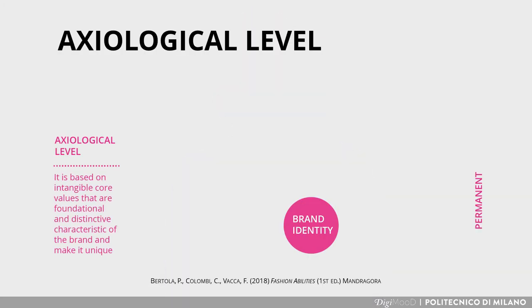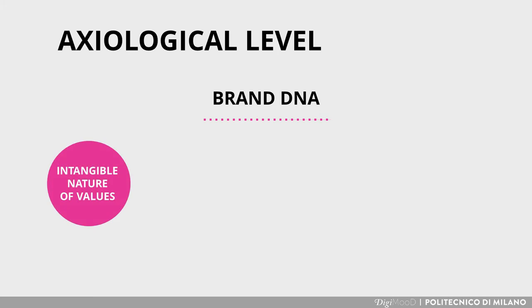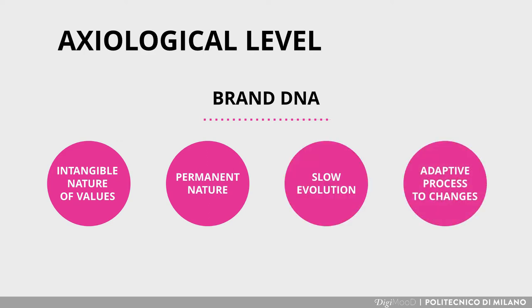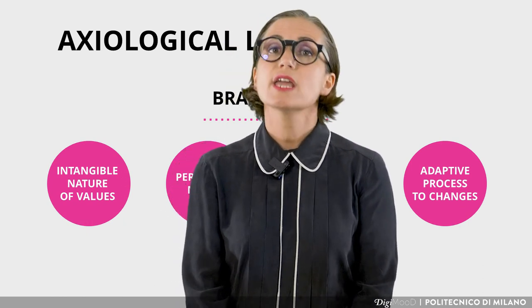Let's start to analyze in detail each level of our brand identity model for fashion, inspired by Semprini's three categories. At the more profound level, the axiological one, identity-building characteristics are situated, which derive from the brand's distinctive values. Those may relate to the specific historical and sociocultural context in which the brand originated, may embed unique qualities belonging to local know-how and geo-referenced specificity, as well as may incorporate features belonging to the founder's identity and his own vision. This level, constituting the brand DNA, has the intangible nature of values and has mostly a permanent duration, characterized by a slow evolution and an adaptive process to contextual sociocultural changes — that is to say, it usually evolves in the long term, very rarely radically or suddenly.